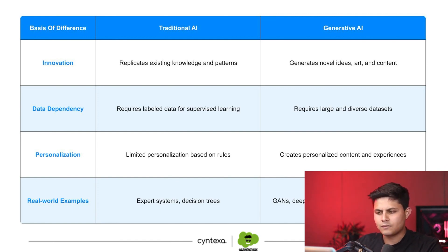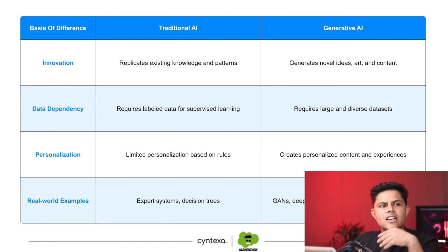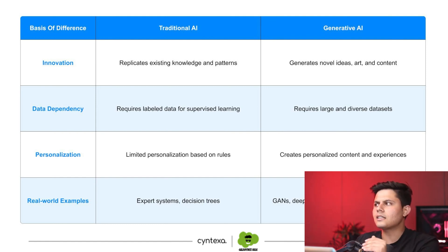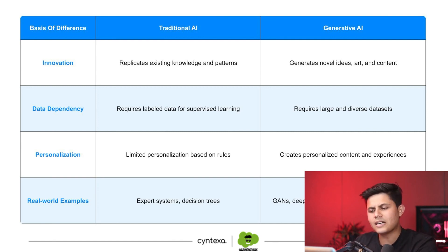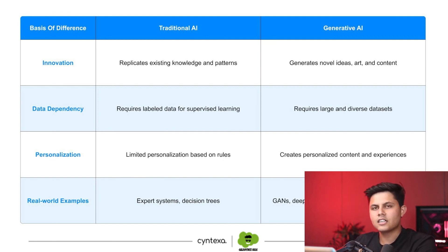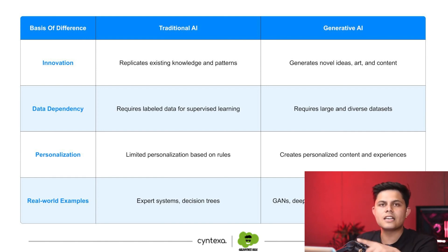In terms of innovation, traditional AI replicates existing knowledge and patterns, while generative AI generates novel ideas, art, and content. The outputs that generative AI creates are unpredictable, whereas the outputs of traditional AI are absolutely predictable based on prior knowledge only. Regarding data dependency, traditional AI requires labeled data for supervised learning, while generative AI requires large and diverse datasets — because you want it to create content on its own, so you have to train it really well.